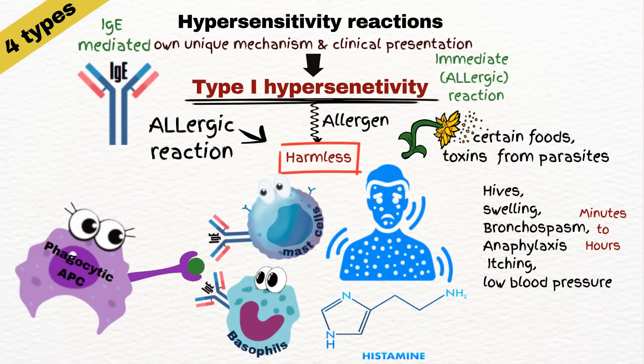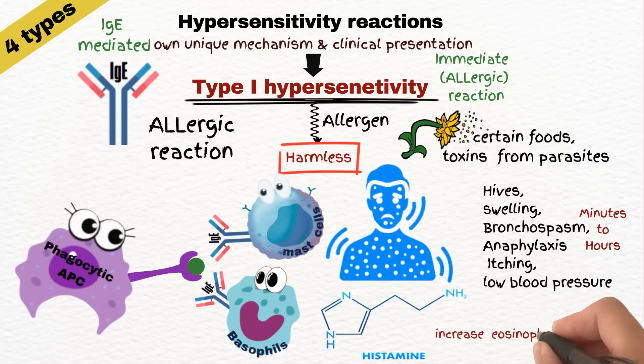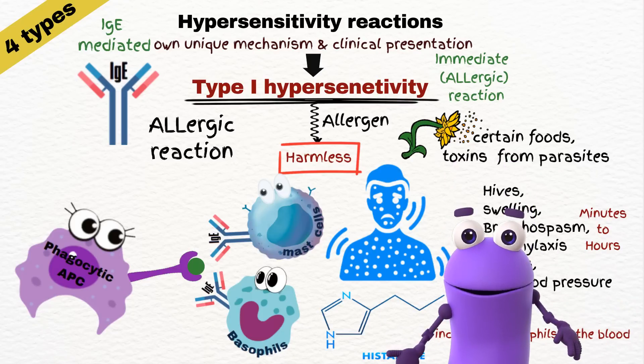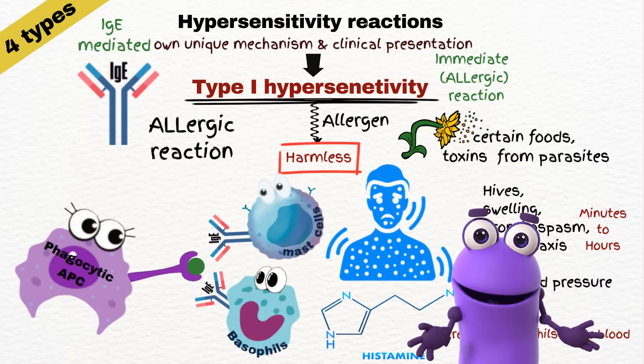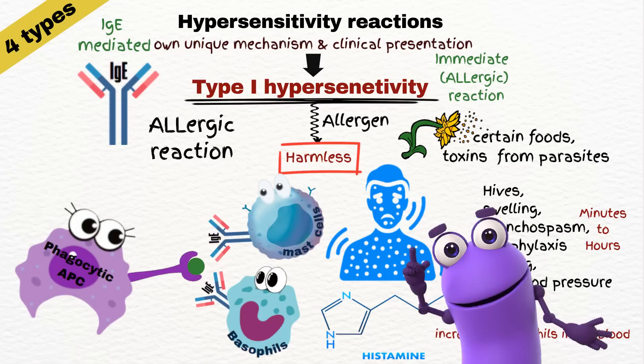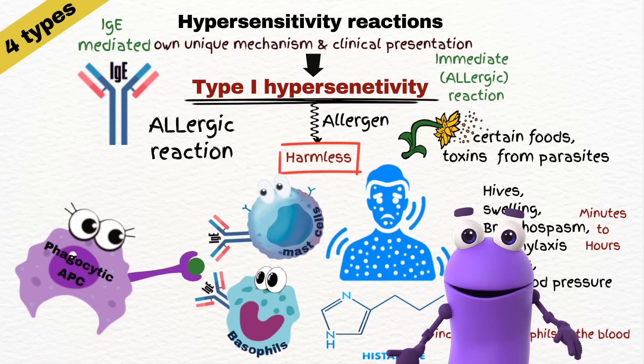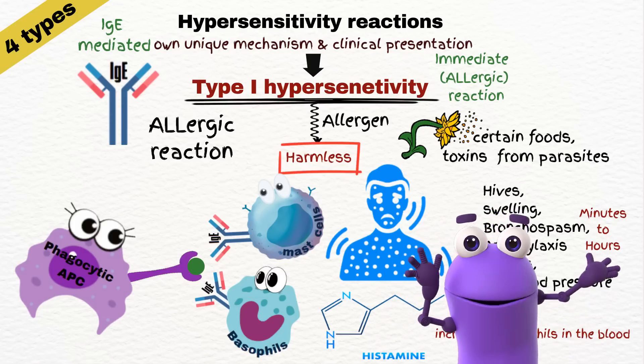Symptoms occur usually within minutes to hours, including low blood pressure. You might also see an increase in eosinophils in the blood. So, type 1 reactions are quick, immediate, and involve immunoglobulin E and histamine release.